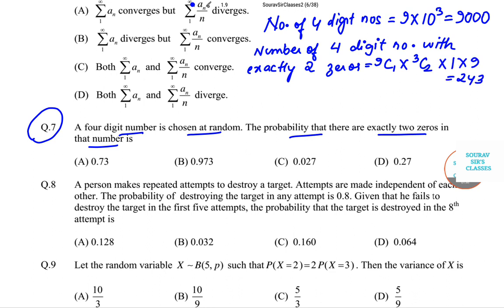So the required probability is equal to 243 by 9000, and the probability will be 0.027. That is option C will be the correct answer to this particular question.